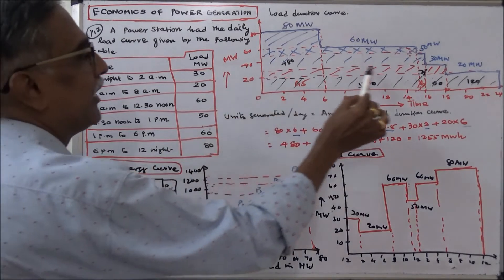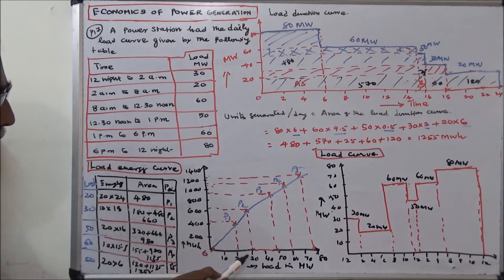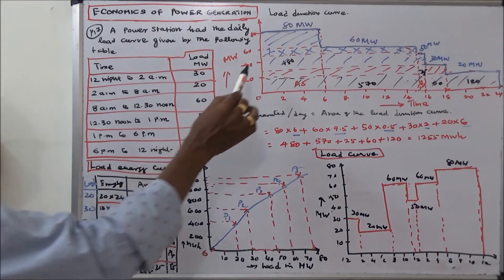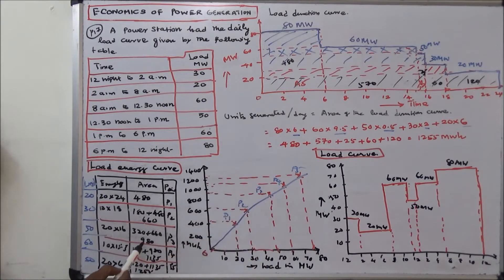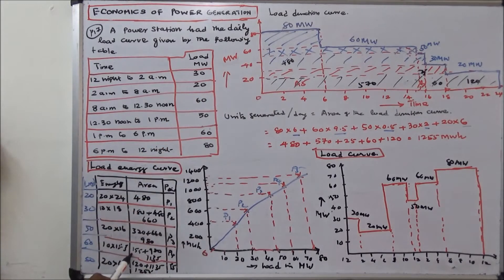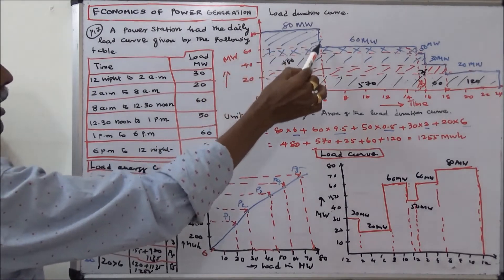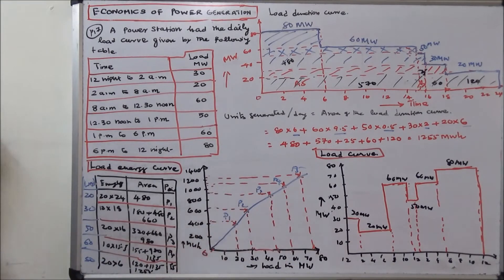For area A3: 20×16 = 320; 320 + 660 = 980 — point P3 at 50 MW. For area A4: 10×15.5 = 155; 155 + 980 = 1135 — point P4 at 60 MW. Last, area A5: 20×6 = 120; 120 + 1135 = 1255 — point P5 at 80 MW. This curve is called the load energy curve.